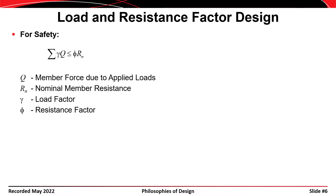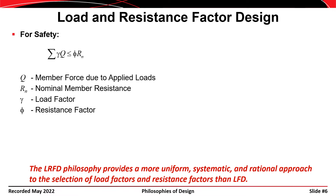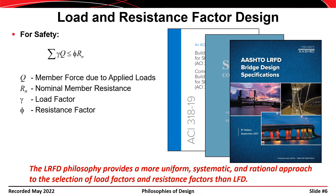Finally, we have the load and resistance factor design philosophy. For safety, the sum of gamma times Q must be less than or equal to phi times R sub n, where Q is member force, gamma is a load factor, R sub n is a nominal member resistance, and phi is a resistance factor. The advantage of LRFD is that it provides a more uniform, systematic, and rational approach to the selection of load and resistance factors. Just about all major design specifications — including ACI 318, AISC 341, and the AASHTO bridge design specification — are based on LRFD.